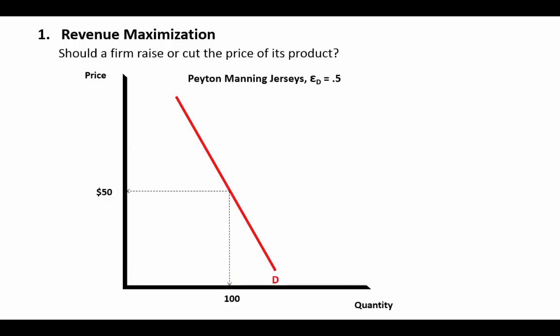Now let's look at the case of a product for which demand is inelastic — something people really want to buy almost regardless of the price. Think of hardcore Broncos fans right after Peyton Manning won the Super Bowl: they want their jerseys, hats, and gear and almost don't care about the price. Let's presume demand for Peyton Manning jerseys right after the Super Bowl is pretty inelastic, with an elasticity coefficient of 0.5. A sports gear shop in Denver is selling 100 jerseys per week at $50 each, so revenue is $5,000.